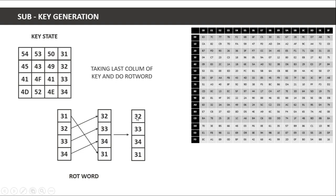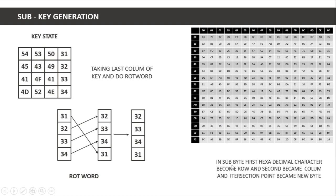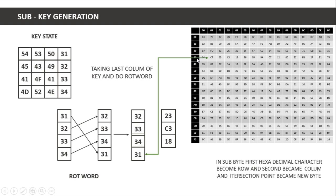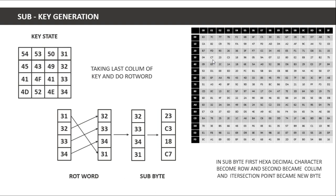Sub byte uses a predefined S-box table. The first hexadecimal character of the byte becomes the row index and the second becomes the column index; the intersection point gives the new byte. For example, row 3 and column 2 gives 0x32, column 3 and row gives 0x18. For a value of 31 we get C7. After applying rot word and sub byte, we complete two of the key generation steps.